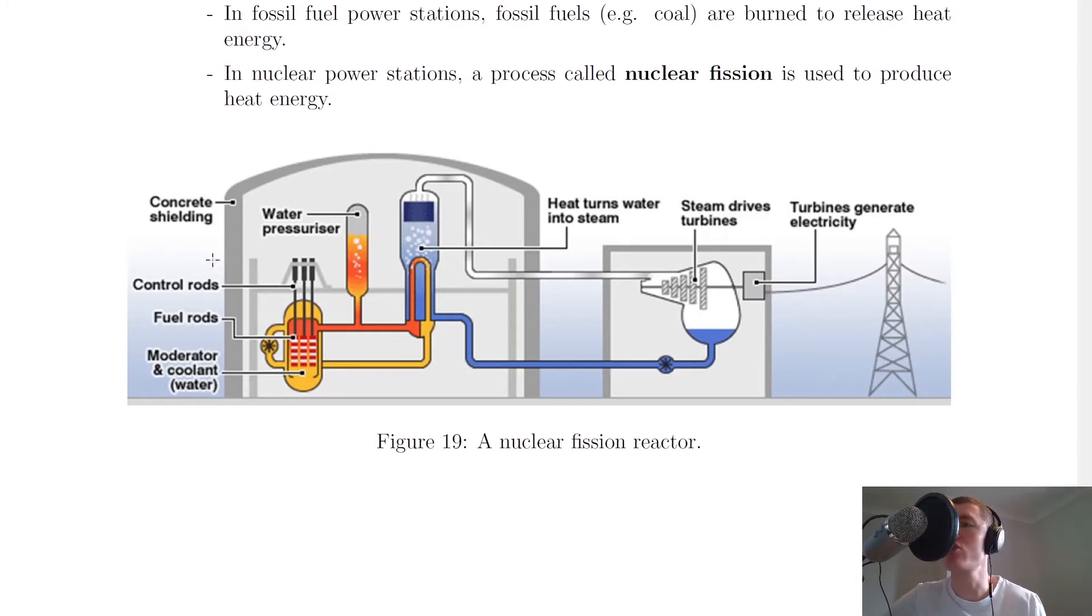The control rods can be moved in and out in order to control how much nuclear fission is occurring. The moderator also acts as a control. You've also got the reactor contained within this concrete shielding. The way reactors work is that you've got this water here which needs to be heated up in some way. When you heat up water, you produce steam, so this steam can then travel along this pipe and can drive a turbine.